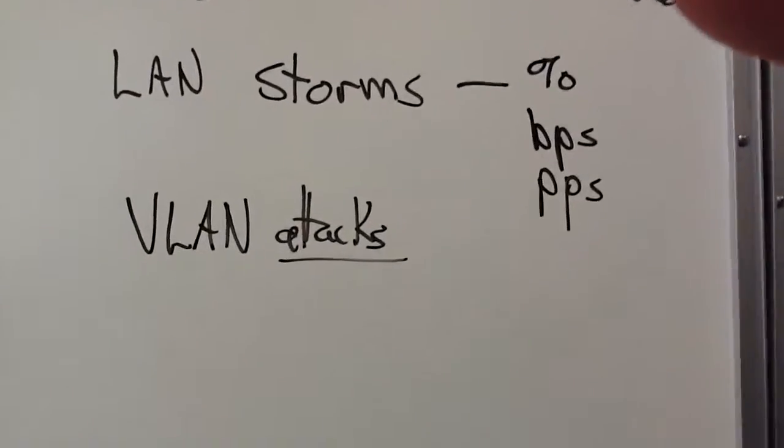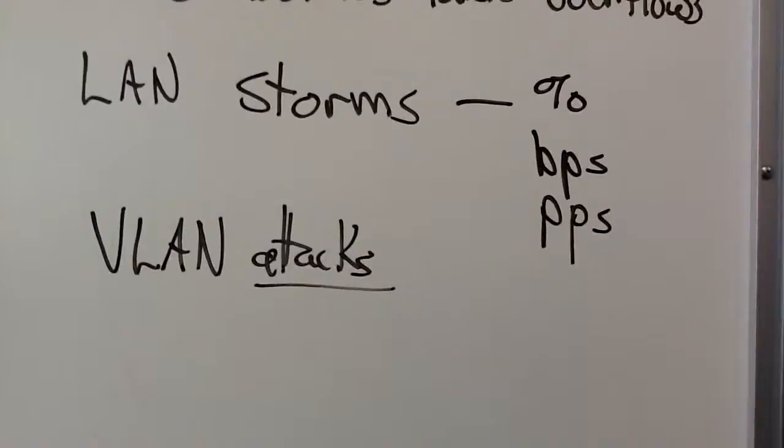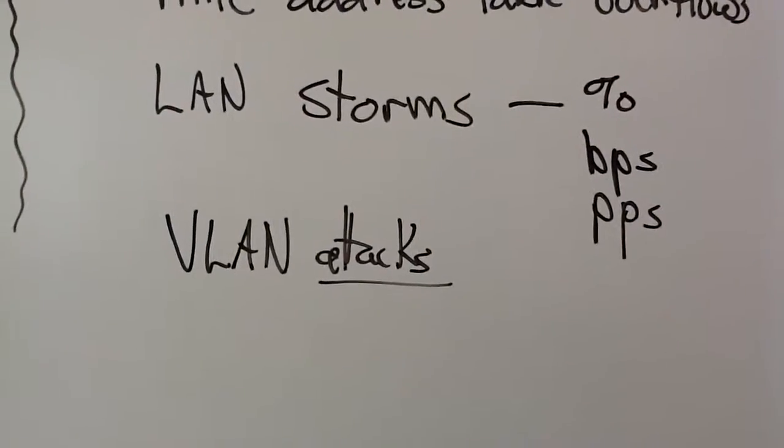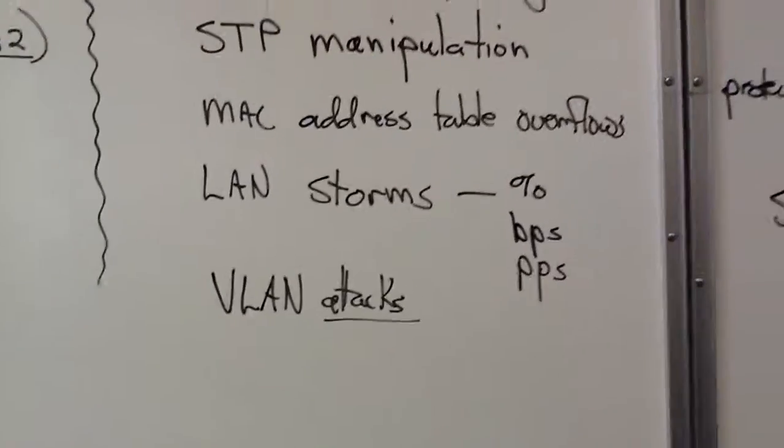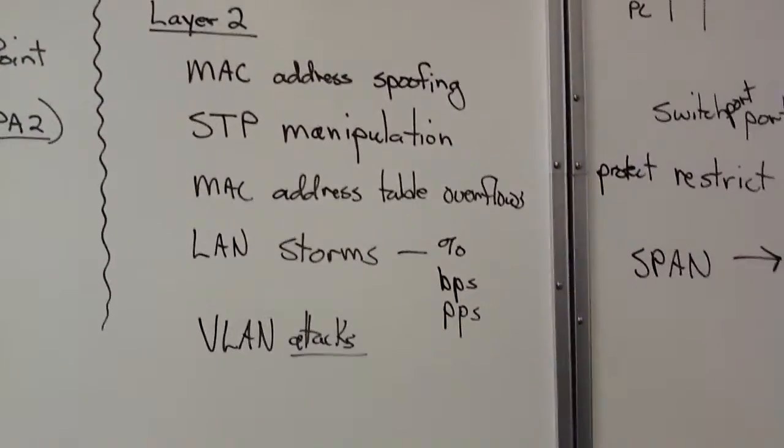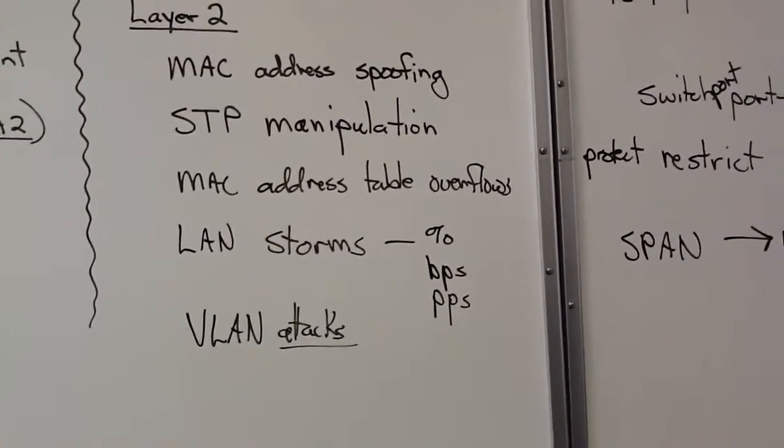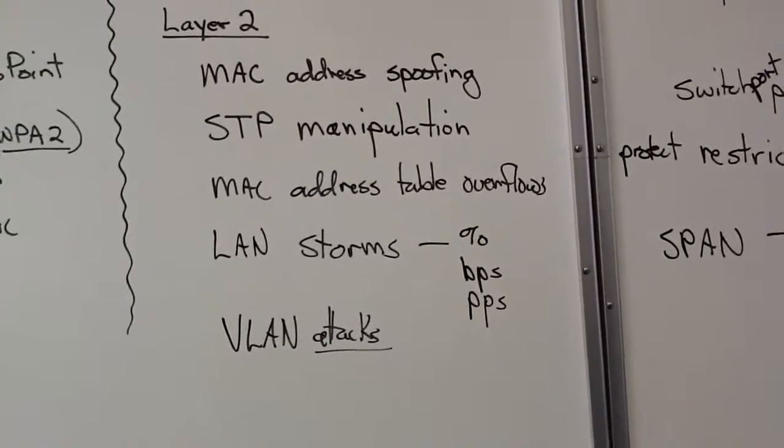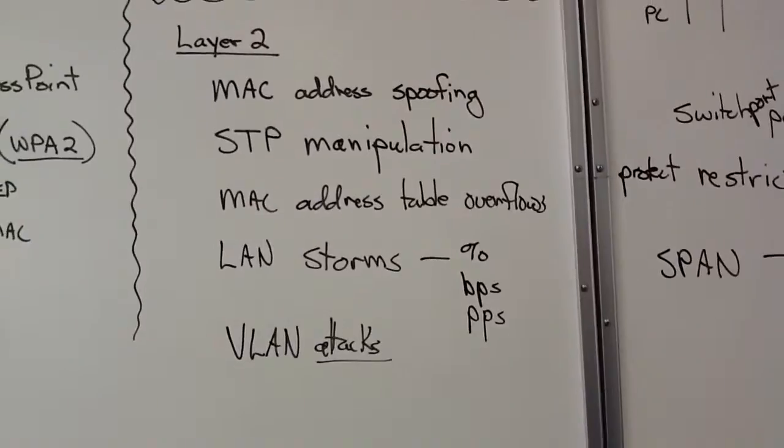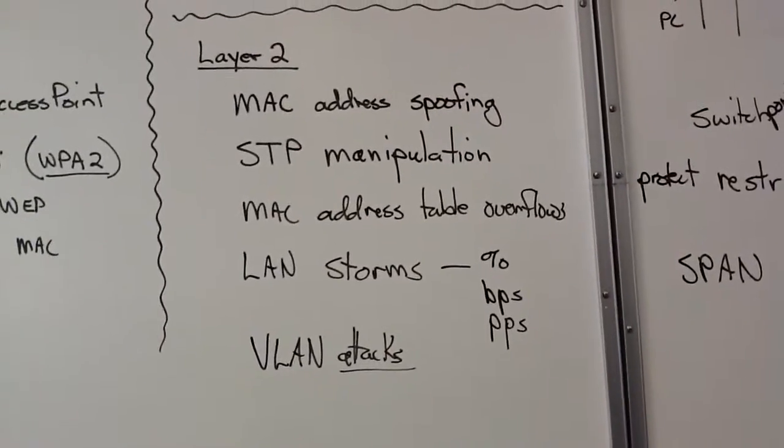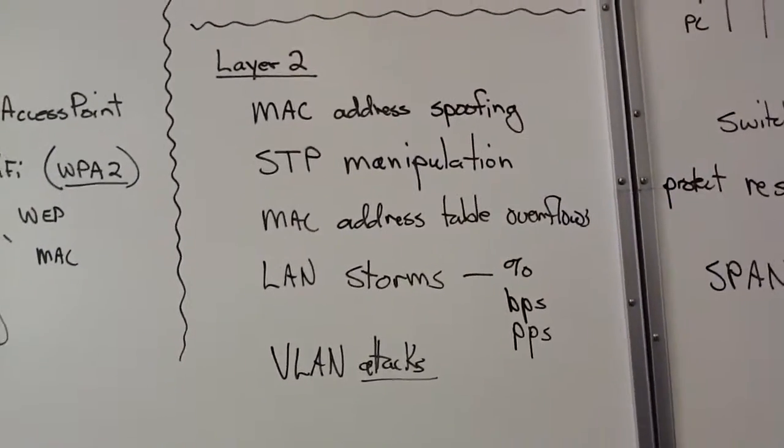LAN storms, how you manage that when there's an overabundance of data sent to the switch. And VLAN attacks, that VLAN hopping, which they call it. Putting a device and using the native VLAN to manipulate it so you can put a tag in that really doesn't match.